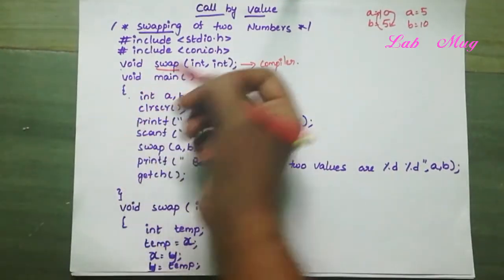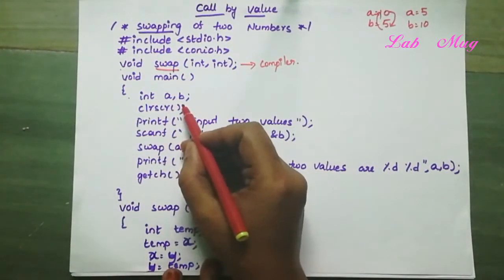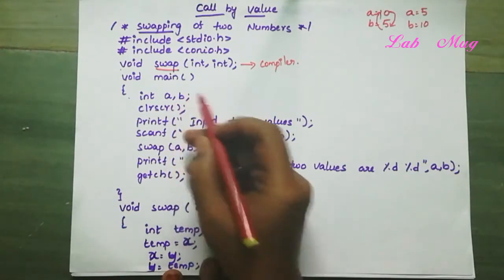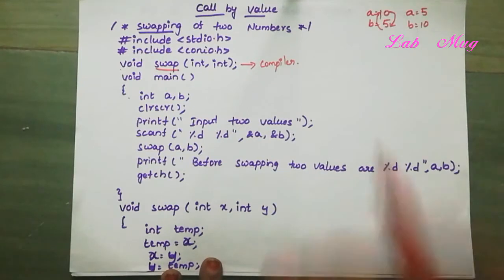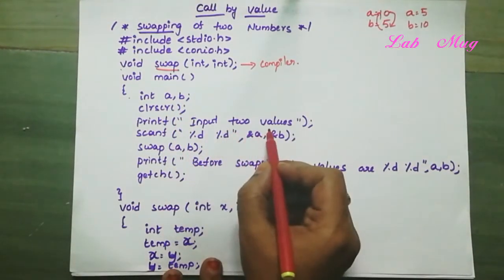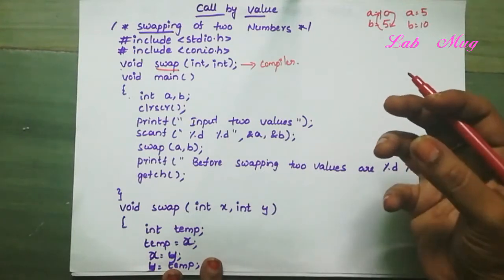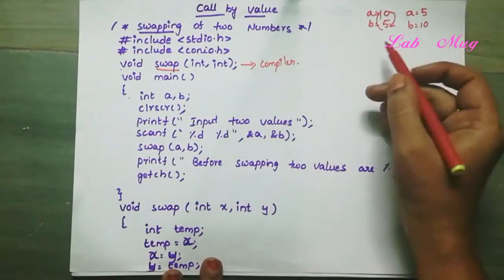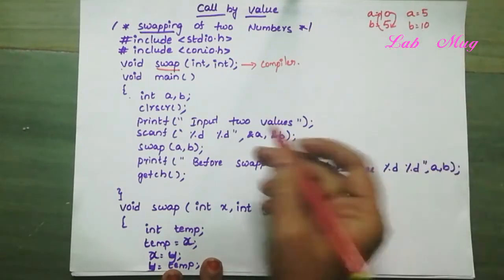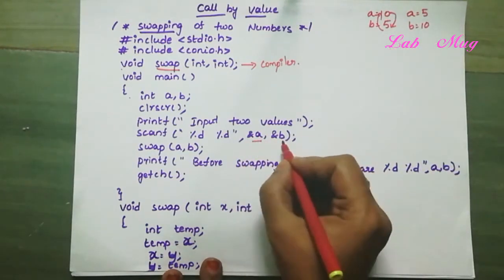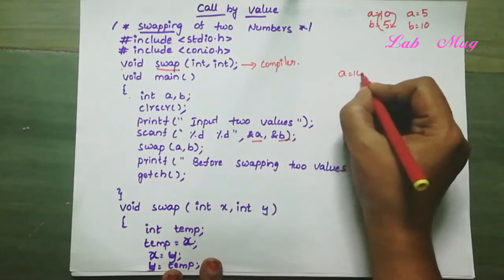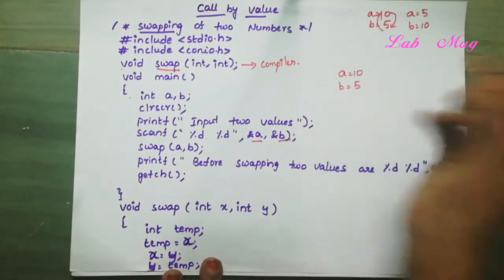Next is void main with integer variables a and b. We use clrscr to clear the screen. Then we input two values from the user — for example, 10 and 5. The first value 10 is stored in a, and the second value 5 is stored in b.